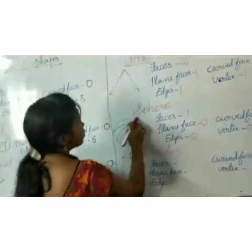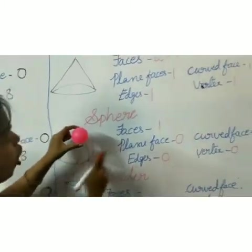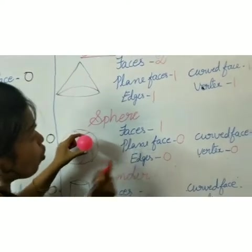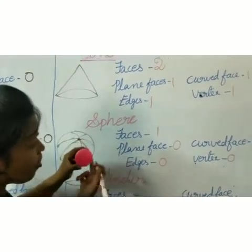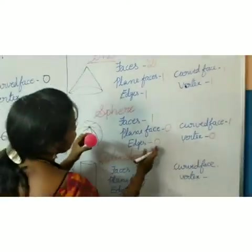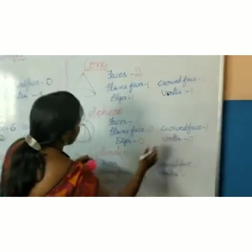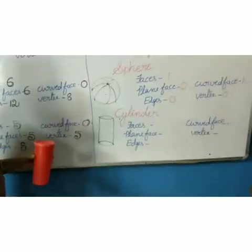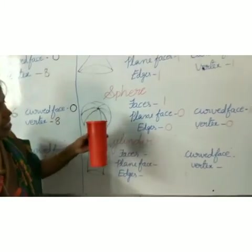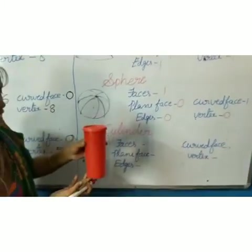Let us see once. What is the shape? Sphere. How many faces it has? Only curved face. How many edges? No edges. At the same time, no vertex. Now let us see cylinder. This is the tumbler, for example for cylinder.